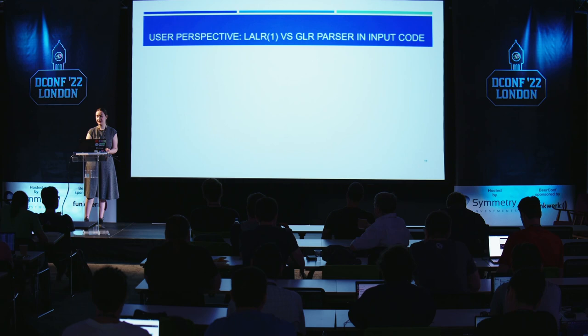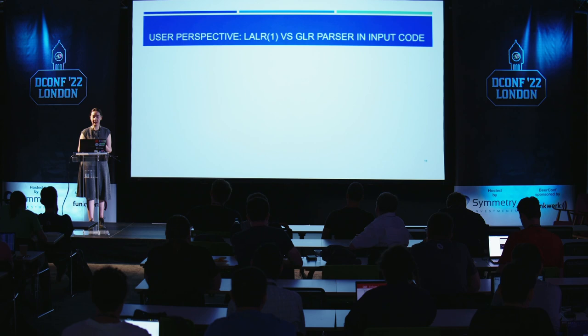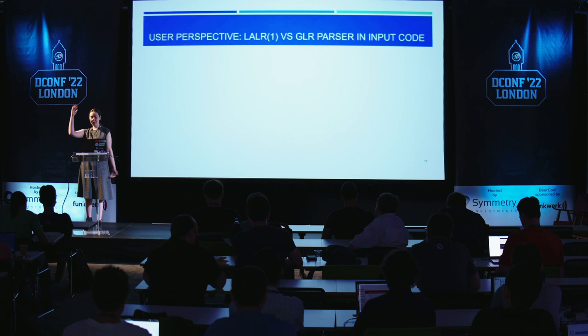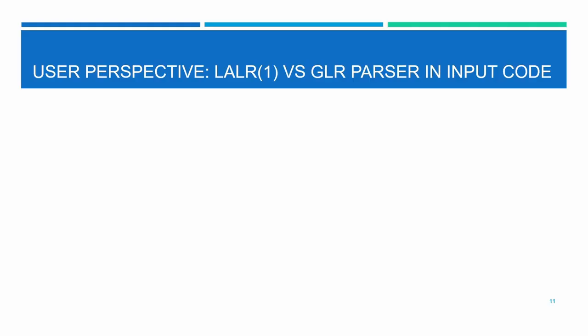Let's see what the difference would be if GLR existed. If you're writing a program and you add a new grammar rule that makes LALR(1) no longer sufficient and you want to switch to GLR, what do you change in the input file? You just add a single line. That's all — all other program parts remain the same.